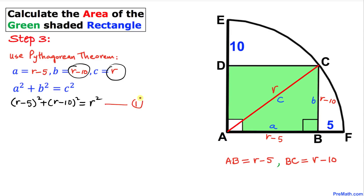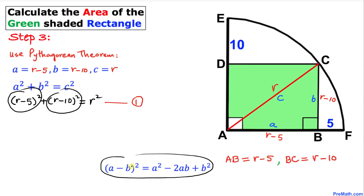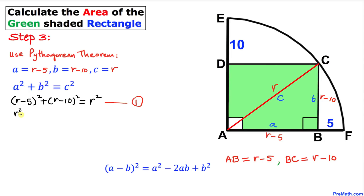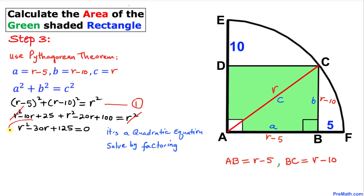Now let's simplify this equation. We expand the binomials using the formula (A − B)²: we get R² − 10R + 25 plus R² − 20R + 100 equals R². This R² cancels out with the R² on the right. Combining like terms: R² − 30R + 125 = 0. This is a quadratic equation.